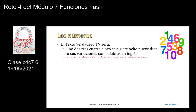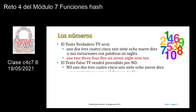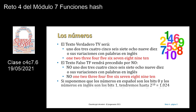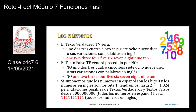Habrá un texto verdadero, que llamaremos TV, que serán lógicamente esos mismos números pero con sus letras: 1, 2, 3, 4, 5, 6, 7, 8, 9, o bien cualquiera de sus variaciones cambiando esas letras en español por sus correspondientes en inglés. Es decir, cambiando el 1 por one, cambiando el 3 por three, cambiando el 5 por five, etc.